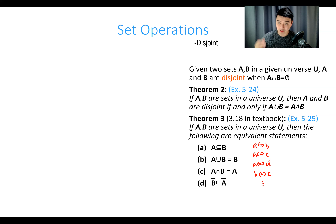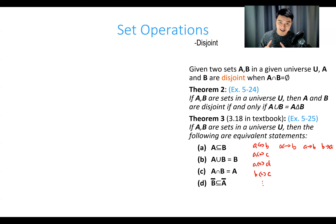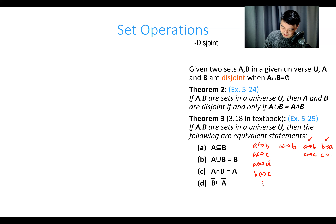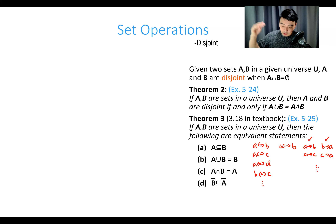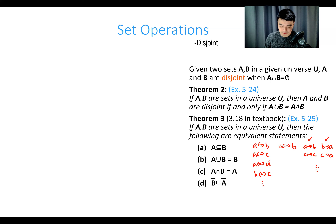The short answer is we only need to make four proofs. We prove A implies B, B implies C, C implies D, and D implies A. If we can prove these four things, then through syllogism we can show that anything implies anything. For example, B implies D follows from B⇒C and C⇒D. And B implies A follows from B⇒C, C⇒D, and D⇒A.